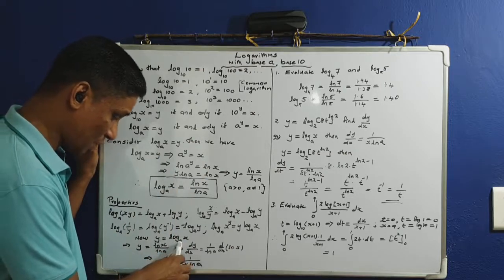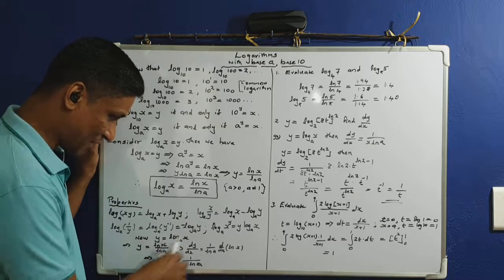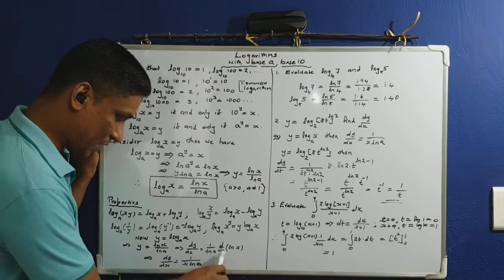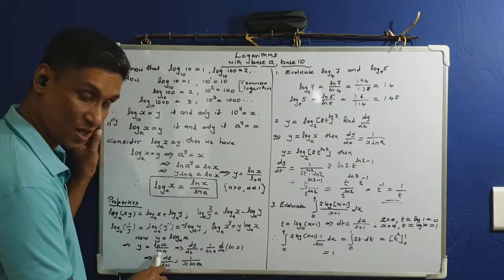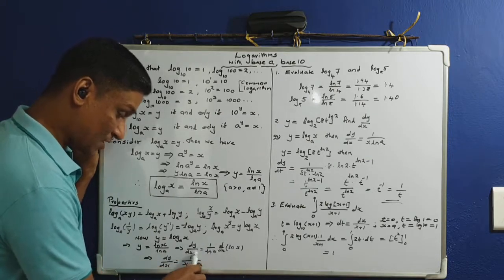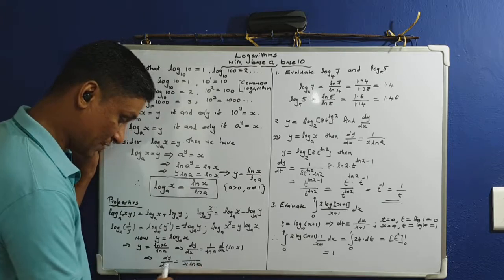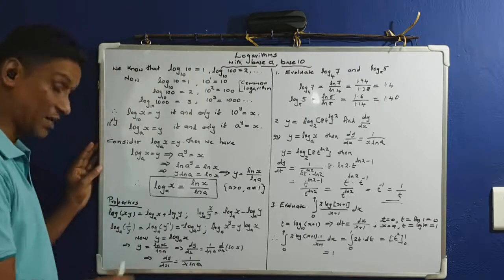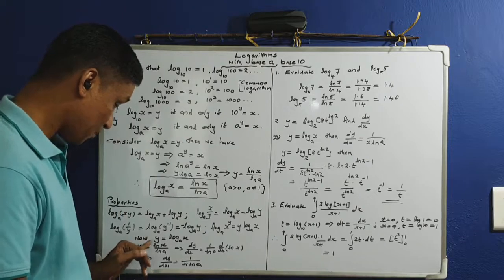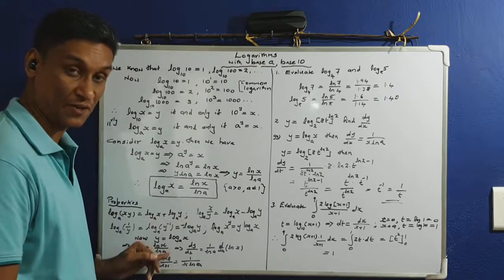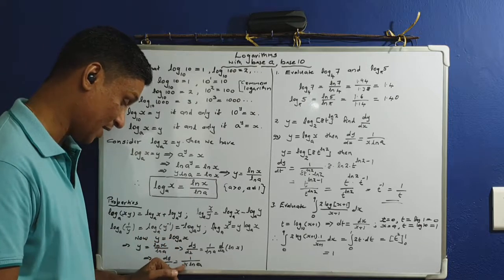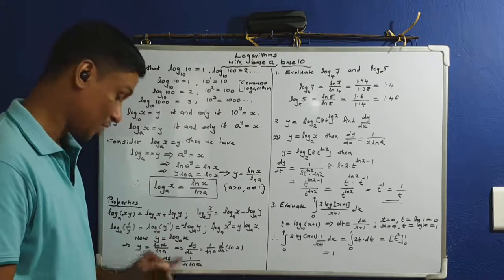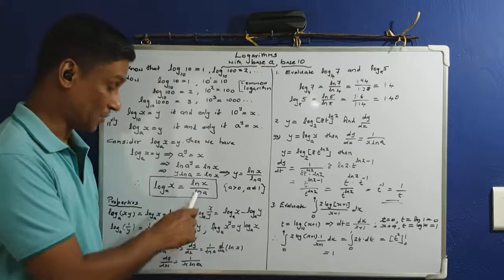Now for differentiation: suppose y equals logarithm of x to the base a, which equals ln(x) by ln(a). Then dy/dx equals 1 divided by ln(a), multiplied by d/dx of ln(x), since 1/ln(a) is a constant. So dy/dx equals 1 divided by (x·ln a). Therefore, the differential of log(x) to the base a is 1 divided by x·ln(a).